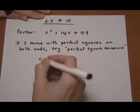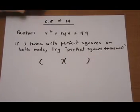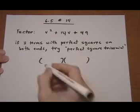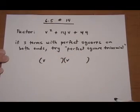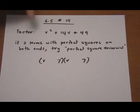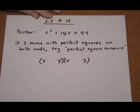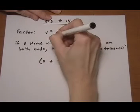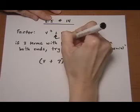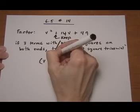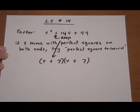The way you do that is very similar to the difference of squares. You take the roots of the ends, v and v, 7 and 7, and you put them in place. And then you keep the sign that's at the beginning. Whatever your middle sign is, keep it down here and you see if it works.